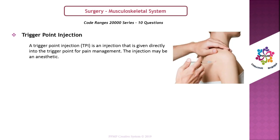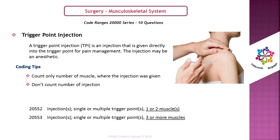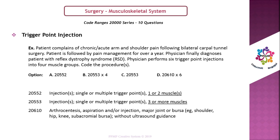Trigger point injection: a trigger point injection is given directly into the trigger point for pain management; the injection may be an anesthetic. Coding tips: first, count the number of muscles where the injection was given — do not count the number of injections. These are the code series for trigger point injection. In the example, the answer is option C. This is an injection procedure, so we can eliminate option D. As per coding tips, identify the number of muscles, not injections.